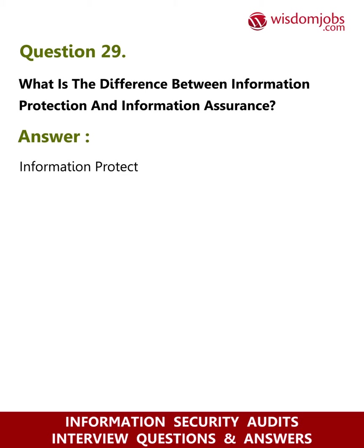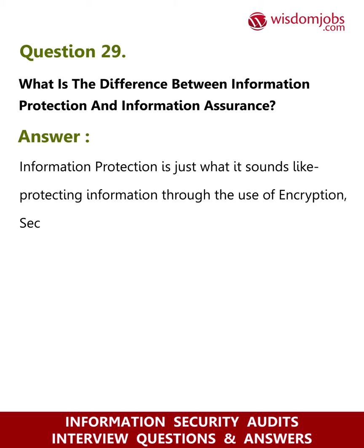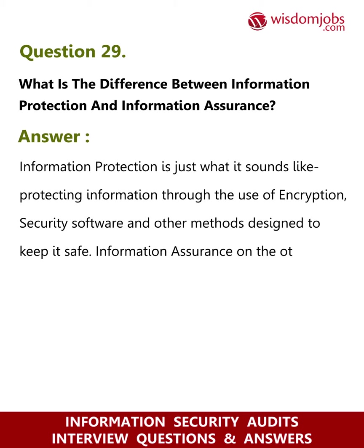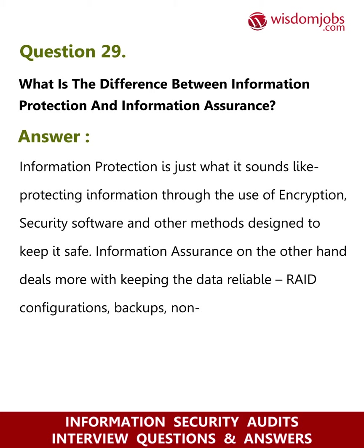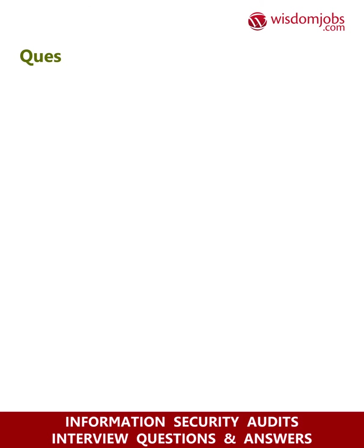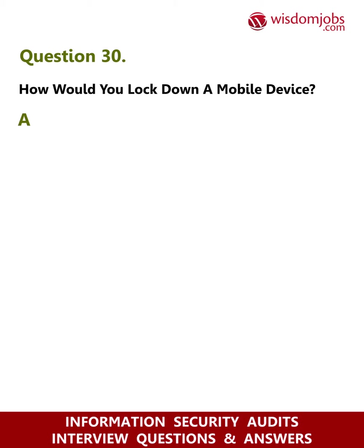Question 29: What is the difference between information protection and information assurance? Answer: Information protection is just what it sounds like — protecting information through the use of encryption, security software, and other methods designed to keep it safe. Information assurance, on the other hand, deals more with keeping data reliable: proper configurations, backups, non-repudiation techniques, etc.